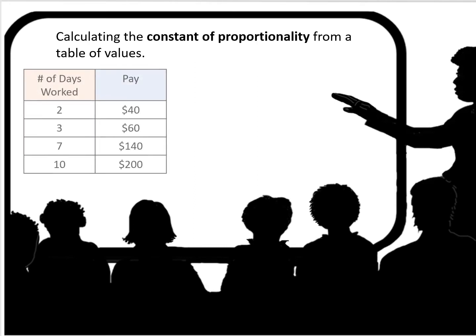Calculating the constant of proportionality from a table of values. Here we have a table showing the number of days worked and the corresponding pay. First we need to find the rate of pay, that is per day.